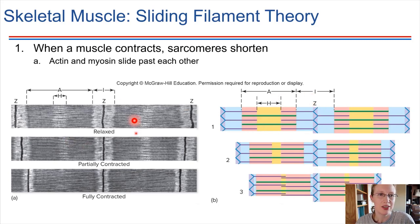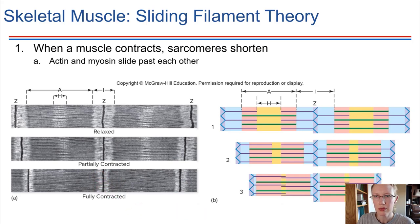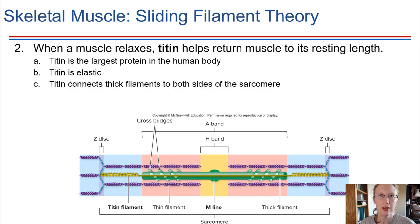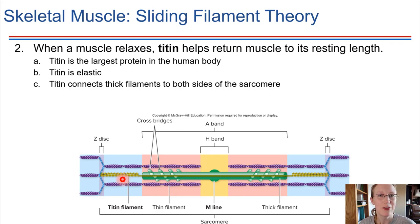We can see the sliding filament theory in the schematic and in real microscope images of a muscle — relaxed, partially contracted, fully contracted. The overlapping increases and the Z-lines get closer together as a result of contraction. When a muscle relaxes, the sarcomeres also contain a special molecule called titin, a protein that acts like a spring — it's very elastic and helps bring the muscle back to its original shape. Titin is the largest protein in the human body, and it also stabilizes the whole sarcomere structure, acting as an anchor between myosin and the Z-disc.